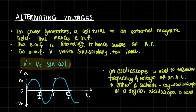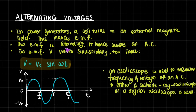Current is always driven by an electromotive force or voltage. If you have an alternating current, there must be an alternating voltage driving it. In power generators, a coil turns in an external magnetic field, inducing an EMF that continuously changes direction in a sinusoidal way. So the EMF is also alternating and causes an alternating current. The voltage varies sinusoidally as V = V₀ sin(ωt), just like the alternating current.